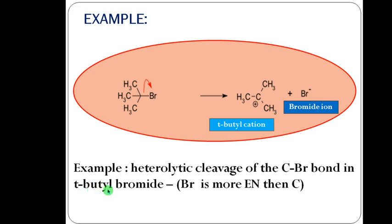For example, we can view tertiary butyl bromide. Upon photochemical cleavage, the C-Br bond is broken. Comparing electronegativity, bromine is more electronegative than carbon, so it takes up all the electrons. This gives a tertiary butyl cation and a bromide ion. This is a very good example of heterolytic cleavage of the C-Br bond.